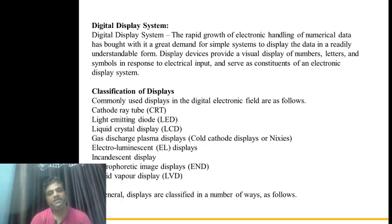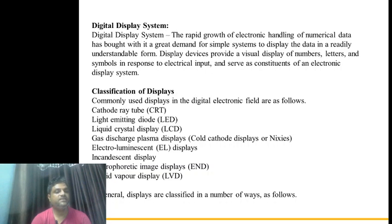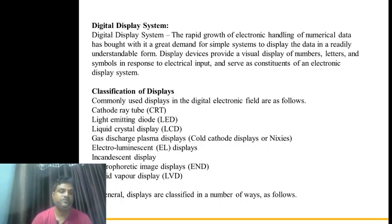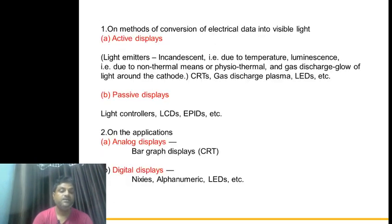The classification of displays includes: CRT (cathode ray tube), LED (light emitting diode), LCD (liquid crystal display), gas discharge plasma display, electroluminescent display, incandescent display, retro-phosphoric image display, and liquid vapor display. These last ones represent future technologies. Displays are generally classified in a number of ways.